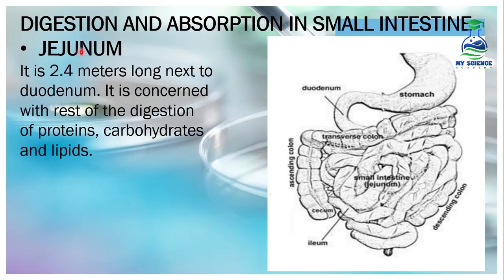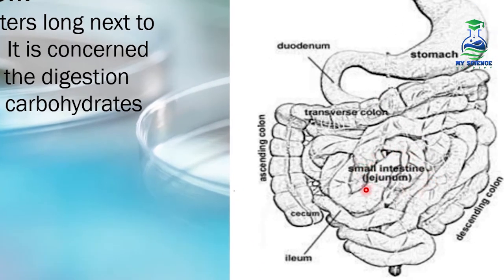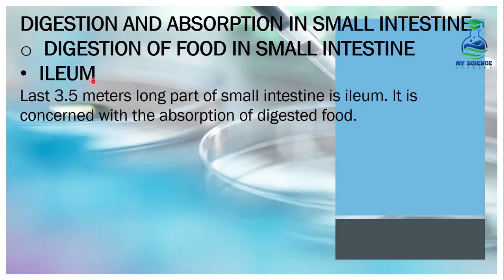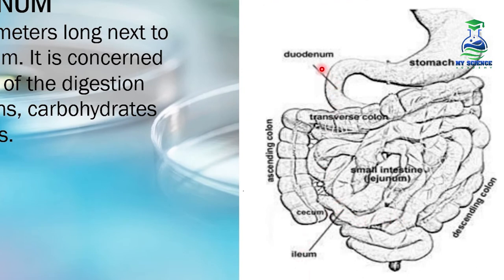The second part of the small intestine is the jejunum. It is 2.5 meters long, next to the duodenum, and is concerned with the rest of the digestion of proteins, carbohydrates, and lipids. The last portion of the small intestine is the ileum — the last 3.5 meters long part — and it is concerned with the absorption of digested food. The first two parts, duodenum and jejunum, play their role in the digestion of food, while the ileum handles absorption.